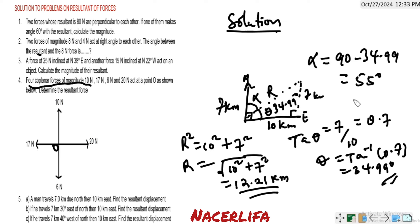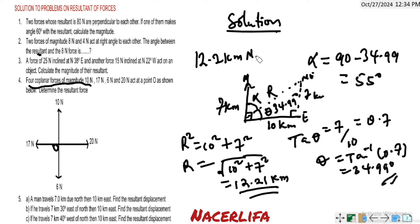This angle is 34.99 degrees. We label the complementary angle alpha. Since the sum of angles is 90 degrees, alpha = 90 minus 34.99 ≈ 55 degrees. The resultant displacement has a magnitude of 12.2 kilometers in the direction north 55 degrees east.